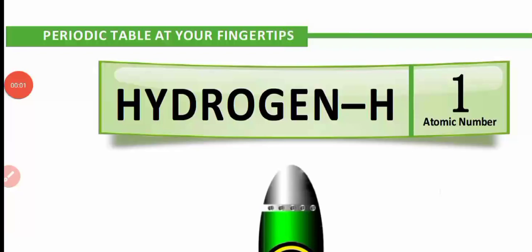Hello guys, welcome to Arqisthus Foundation. Today I will discuss about Hydrogen. Hydrogen has atomic number 1, and it is represented by H. I will give a clue regarding the atomic number in this video.